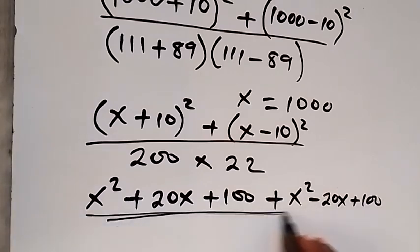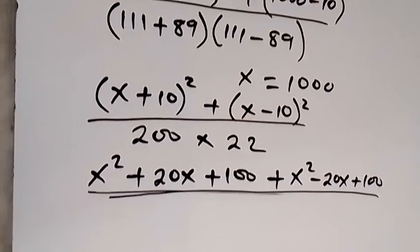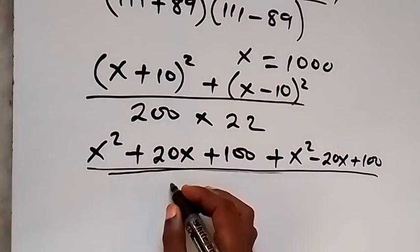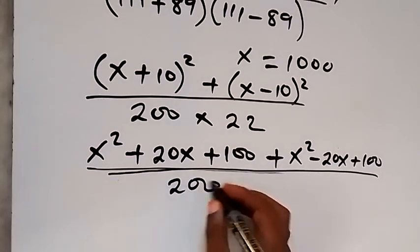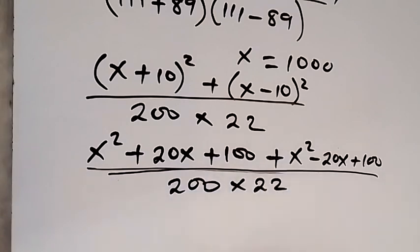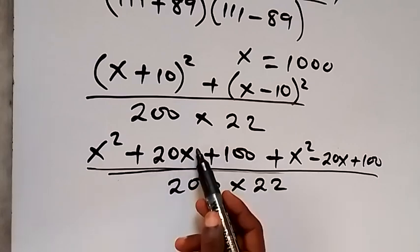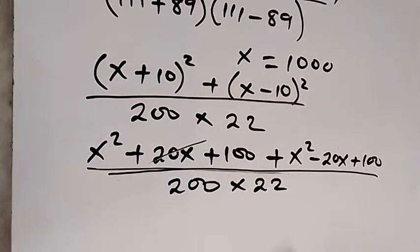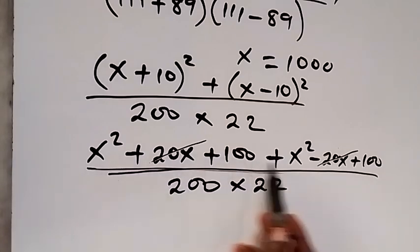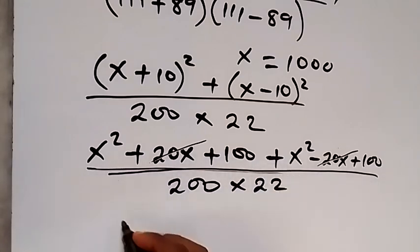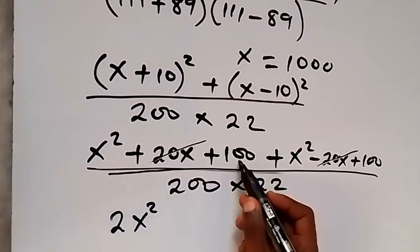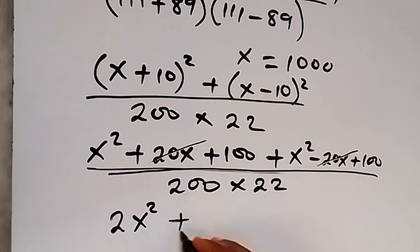Then all divided by what we have in the denominator, that's 200 times 22. And from there, what we have in the numerator here, we reduce because we reduce this plus 20x, we cancel minus 20x. And then we can add x squared plus x squared because they are like terms, so that will give us 2x squared, then we have 100 plus 100, that's plus 200.